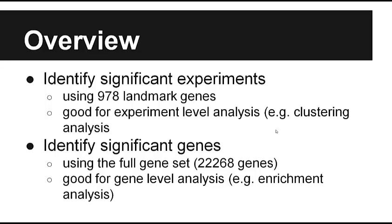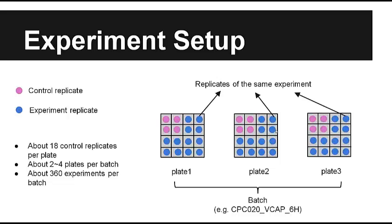Here's the experiment setup. The purple is control and the blue is the experiment. Here is the concept of batch — Broad calls it a perturbation group, but I just call it a batch. A batch is a group of experiments that share the same plates. Here is a batch of three plates, and for each plate it has control replicates and experimental replicates.